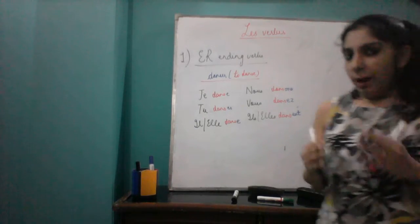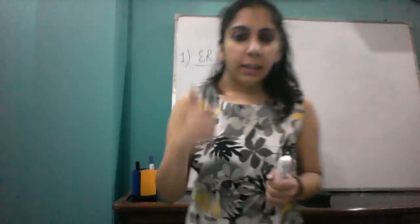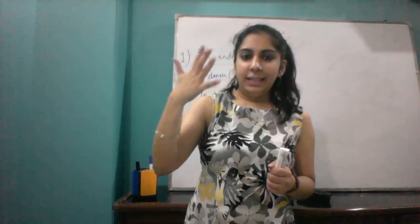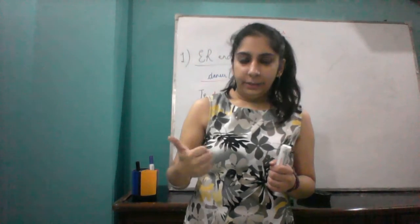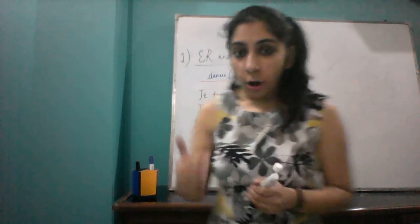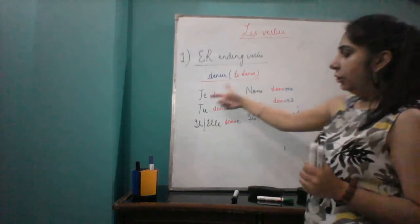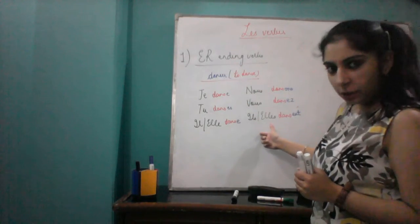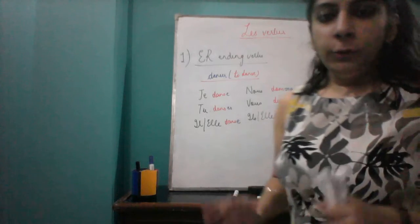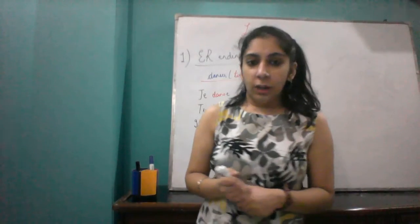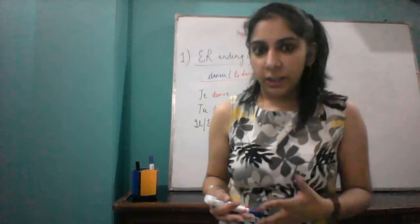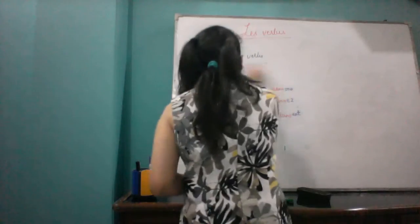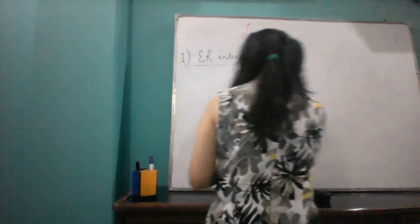You have now learned the rule. The endings are: E, ES, E, ONS, EZ, ENT — in the order of the subjects je, tu, il, nous, vous, ils. This is all about ER ending verbs. Now let's work on the exceptions that we have in ER ending verbs.